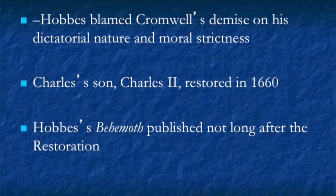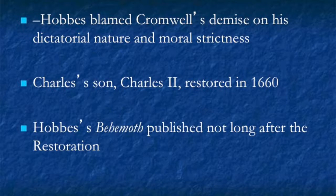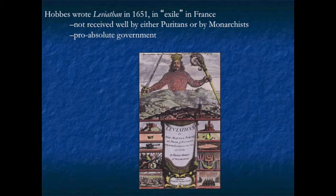Hobbes watched the entire transformation: the demolishment of the sitting monarch, the shocking abolition of the monarchy as an institution, the experiment with democratic rule that turned into a dictatorship under Cromwell, and then the rejection of that experiment and a return to the old monarchy with Charles II. He came back when Charles II came back, having been in exile for about ten years. He was in France when he wrote the book you have — Leviathan.